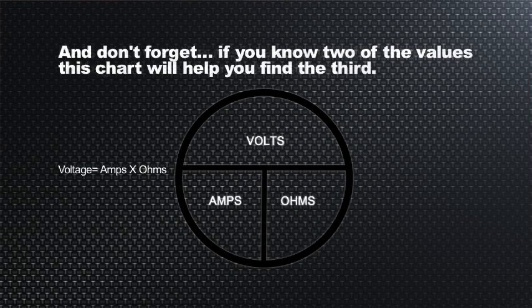Also, the same chart, keep in mind that if you don't know what one of the factors are, there's just three things, right? Volts, amps, and ohms. If you don't know what one is, but you know the other two, you can simply do a multiplication or division problem like so.